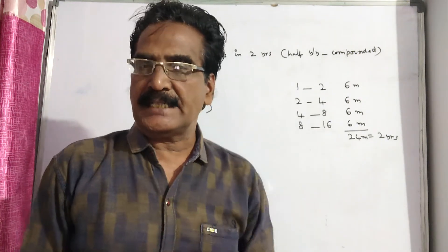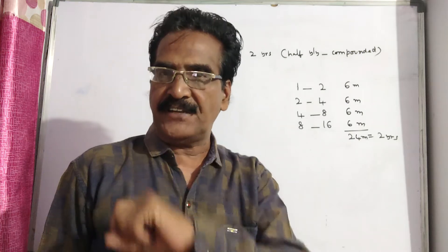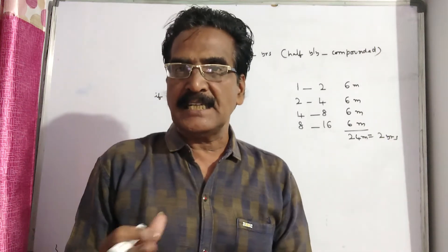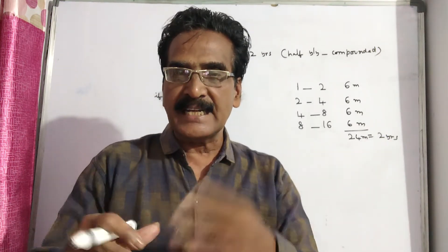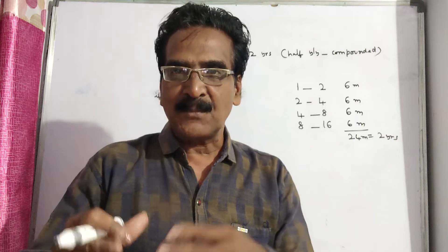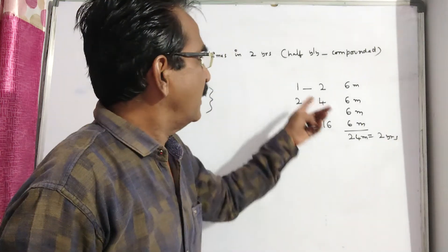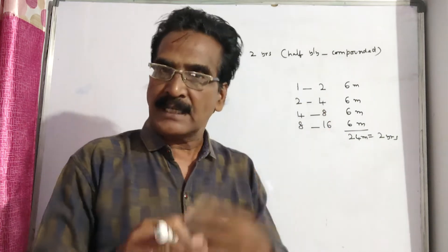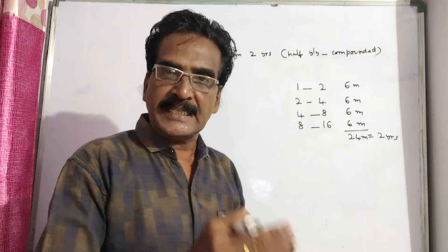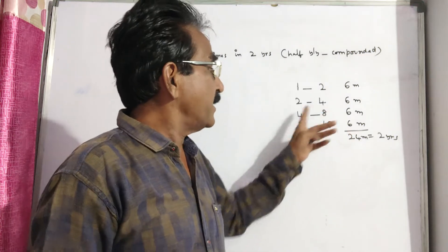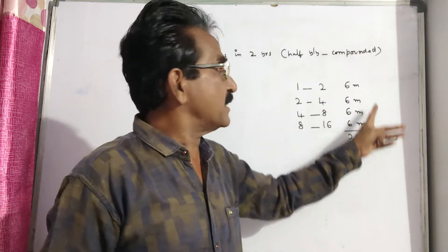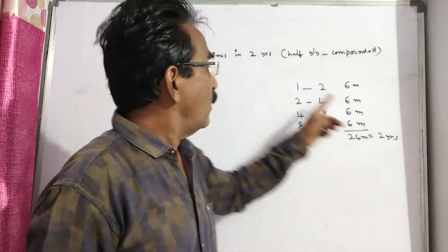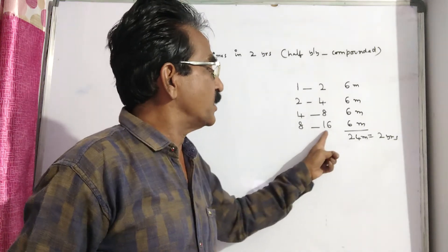A certain sum becomes 16 times in 2 years if half-yearly compounded. 16 times in 2 years means the amount is doubled in every 6 months — 1 becomes 2 in 6 months, 2 becomes 4 in another 6 months, 4 becomes 8 in another 6 months, and 8 becomes 16 in another 6 months. That means in 2 years, the amount becomes 16 times.